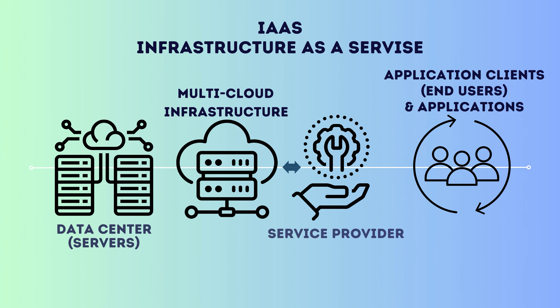If we look at IaaS infrastructure, then data center and server — that is basically the IaaS data center. It consists of multi-cloud architectures. So it's the data center, the server, the multi-cloud architecture, then service providers giving IaaS services such as cloud, and then the end user. That IaaS structure runs from data center to end user, hosted via providers and your multi-cloud infrastructure.